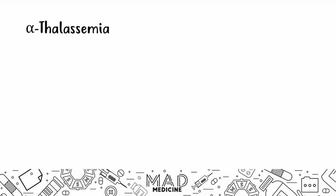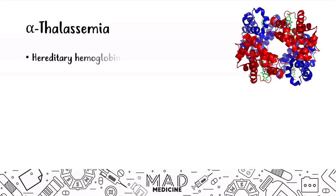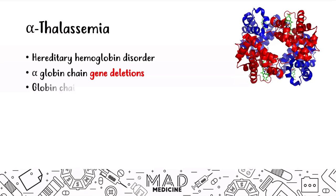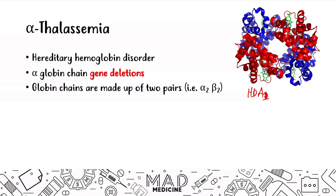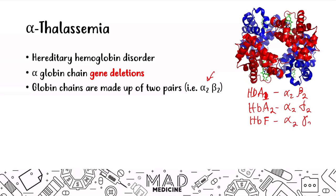Alpha thalassemia is a hereditary hemoglobin disorder that occurs on the alpha chain, and the alpha globin chain is going to have gene deletions leading to alpha thalassemia. The severity of the disease depends on the number of gene deletions. Hemoglobin A1 in adults has two alpha chains and two beta chains. Hemoglobin A2 has two alpha chains and two delta chains. Hemoglobin F has two alpha chains and two gamma chains. These little pleated sheets are what the globin chains look like, and the green molecules are heme.